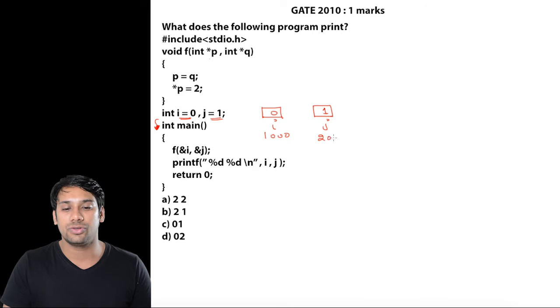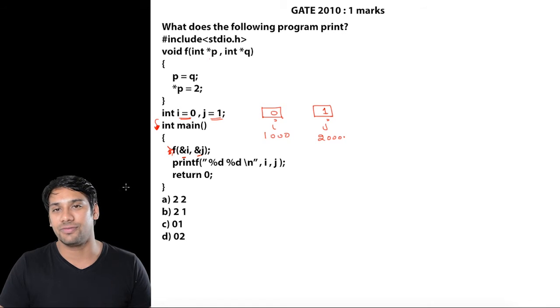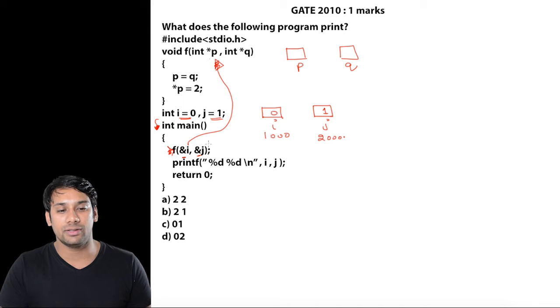We are calling this function and passing the addresses of variables i and j. In the void f function, p and q are two pointers. We are passing the address of i to p and the address of j to q. That means p and q hold the addresses, so p holds 1000 and q holds 2000.